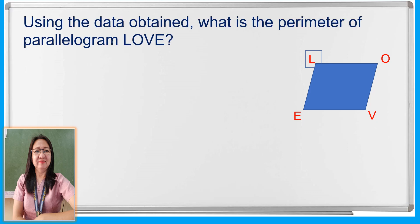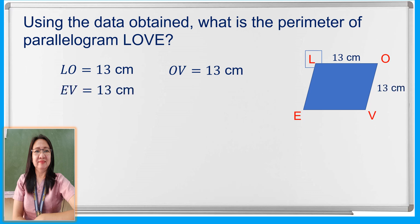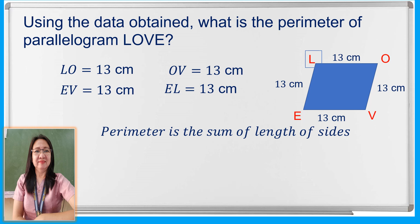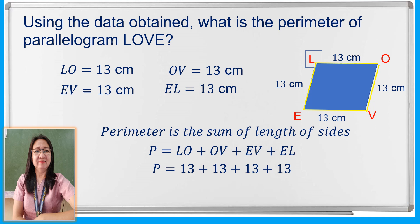Using the data obtained, what is the perimeter of parallelogram L-O-V-E? The length of side L-O is 13 cm, side O-V is 13 cm, side E-V is 13 cm, and side E-L is also 13 cm. Recall that perimeter is the sum of the lengths of all sides. So P equals L-O plus O-V plus E-V plus E-L, which equals 13 plus 13 plus 13 plus 13, giving us 52 centimeters — the perimeter of parallelogram L-O-V-E.